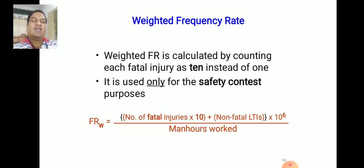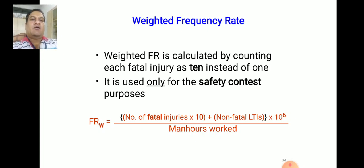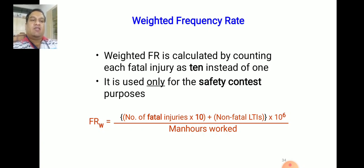WFR (Weighted Frequency Rate) formula is: (Number of fatal injuries × 10 + Number of non-fatal loss time injuries) × 10⁶ / Man Hours Work. The fatal injuries are multiplied by 10 because one fatal injury is considered equivalent to 10 non-fatal injuries.